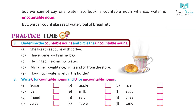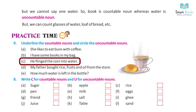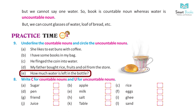Practice time. Question 9: Underline the countable nouns and circle the uncountable nouns. A) She likes to eat buns with coffee. Answer: underline buns, circle coffee. B) I have some books in my bag. Answer: underline books, circle bag. C) He flicked the coin into water. Answer: underline coin, circle water. D) My father bought rice, fruits and oil from the store. Answer: underline fruits, circle rice and oil. E) How much water is left in the bottle? Answer: underline bottle, circle water.